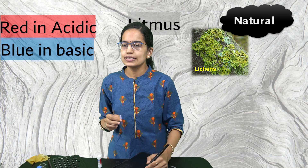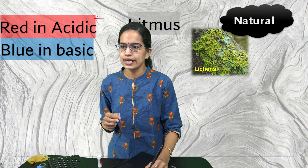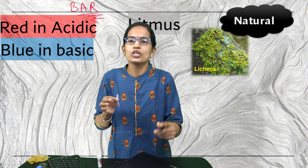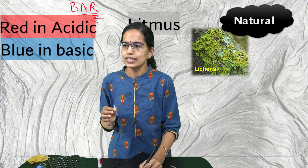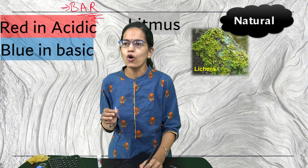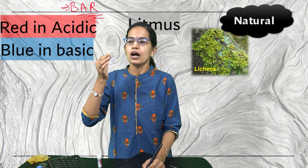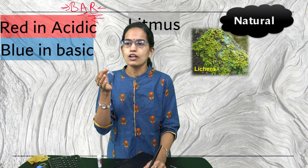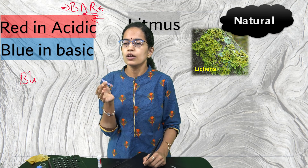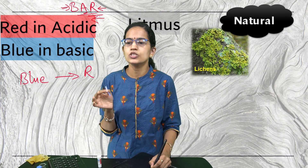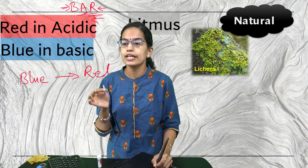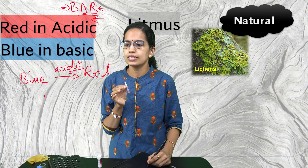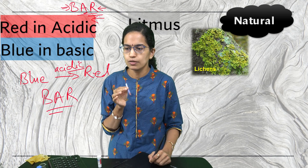You can remember this with the mnemonic BAR — like a chocolate bar. B for blue, A for acidic, R for red. Blue litmus turns red in an acidic solution, and we remember this as B-A-R, bar.